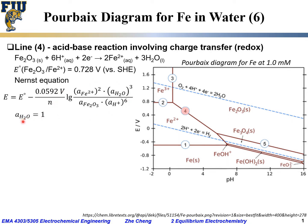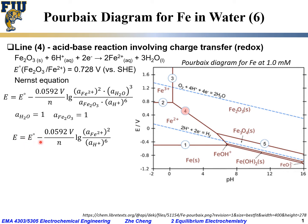For water as solvent, its activity is often taken as 1. For the pure solid Fe₂O₃, its activity is also taken as 1. With these simplifications, the electrode potential becomes: the standard electrode potential minus this factor times the log of the Fe²⁺ activity raised to the power of 2, divided by the proton activity raised to the power of 6.